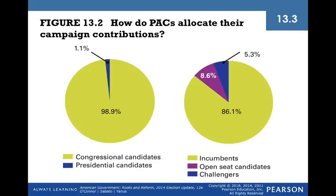Political action committees are major players in American elections. Most PAC money goes to incumbent candidates because they have the best chance of winning — but because most of the money goes to them, that gives them the best chance of winning, so it almost becomes a self-fulfilling prophecy. Very little PAC money goes to challengers, which is one of the things that makes it very difficult for a challenger to defeat an incumbent for re-election. This is one of the major advantages of incumbency.